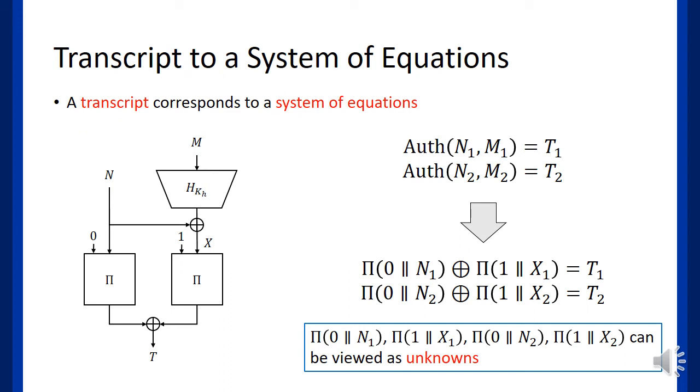To find out the probability to get a transcript in the real world, we construct a system of equations and count the number of solutions of the system. Let's first focus on authentication queries. Since we have the hash key, we know all of the input to permutation pi.